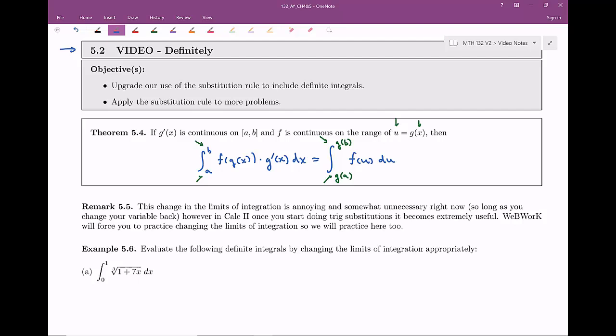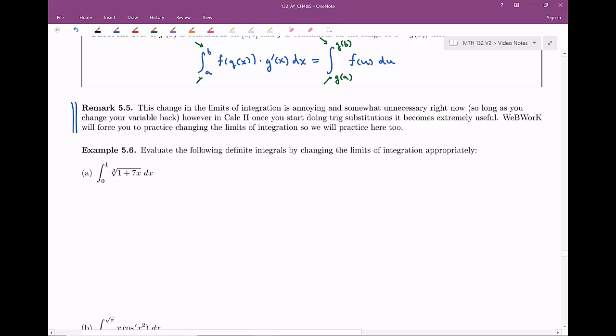For those of you who may have seen this before, you say, do we really need to change the bounds? Can I just solve out the indefinite integral, then plug in those x values for the original function? Yes, that does work, but this remark right here says once you make your way into calc two, when you actually start doing trig substitutions and things like this, it becomes much more useful to have this method. And consequently, a lot of our homework actually forces you to do this, where you change the limits of integration. So I will show you both methods here in this first example, but I just want you to be familiar with this method where you actually change the bounds, because this becomes more useful later on, and you'll have to do it in your homework now.